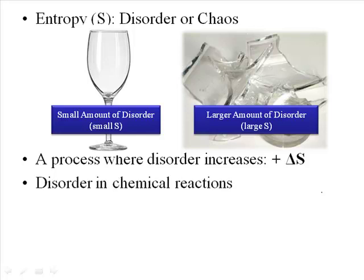In chemical reactions, we have to figure out how to look at the disorder of a reaction. One way to think about it is to look at the number of molecules involved. The universe actually favors processes where you increase the number of molecules. It's fairly unlikely that you would see ten different molecules combine in a chemical reaction to form one product, but there are a lot of reactions where one or two molecules might react to form five, six, or ten different products — because that's an increase in disorder.